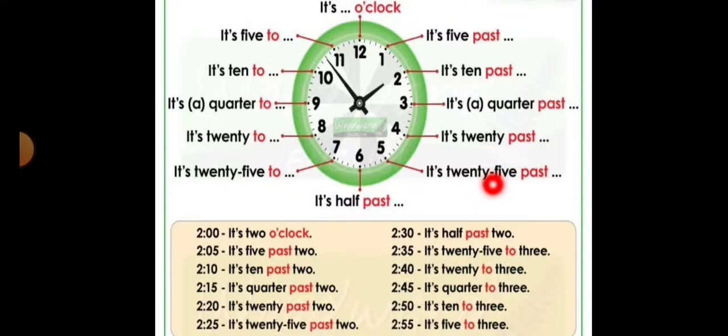Then we will move to two. It's twenty five to two, twenty to two, quarter to two, it's ten to two, it's five to two, and it's two o'clock. I hope you understood. So this is so easy. Just you have to keep in mind two things: that the first portion of the clock is dealing with past, and the second portion of the clock is dealing with to. That's it.